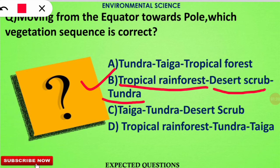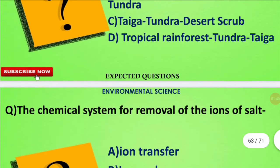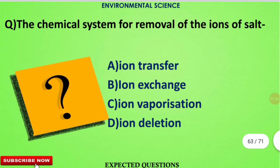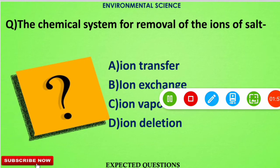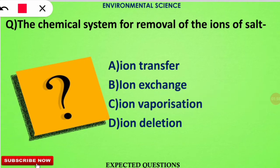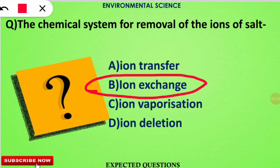The next question is: the chemical process used for removal of salt ions is called what? You should not get confused between ion transfer and ion exchange. The correct option is B. The process of removal of salt ions is known as ion exchange, where cations are exchanged with cations and anions are exchanged with other anions.